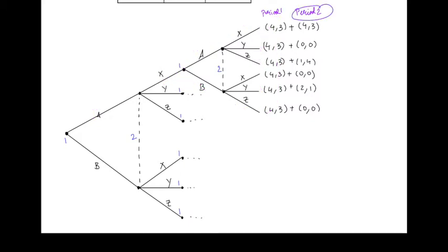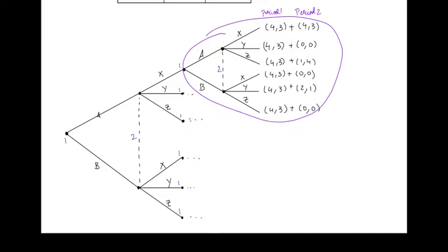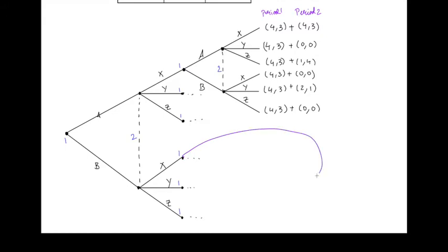The second period payoffs depend on what they do in the second period. So if they play A and Z, for example, the payoffs in the second period are going to be 1 and 4. That gets added to the first period payoffs of 4 and 3. The only difference between this subgame and any other subgame would be the first period payoffs — for example, instead of 4, 3 it would be 0, 0.